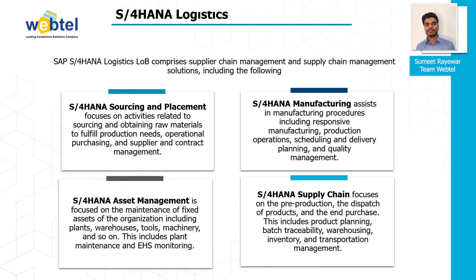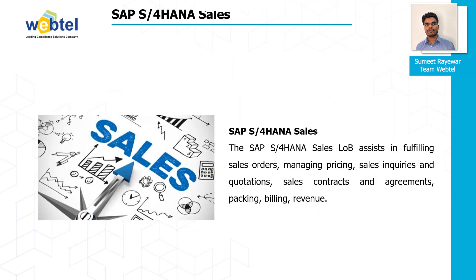S4 HANA Logistics: This LOB comprises supplier chain and supply chain management solutions including S4 HANA Sourcing and Placement, S4 HANA Manufacturing, S4 HANA Asset Management, and S4 HANA Supply Chain. S4 HANA Sales: This LOB assists in fulfilling sales orders, managing pricing, sales inquiries and quotations, sales contracts and agreements, packaging, billing, and revenue.